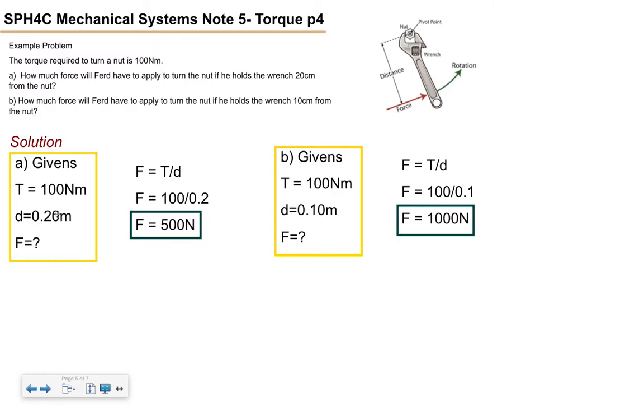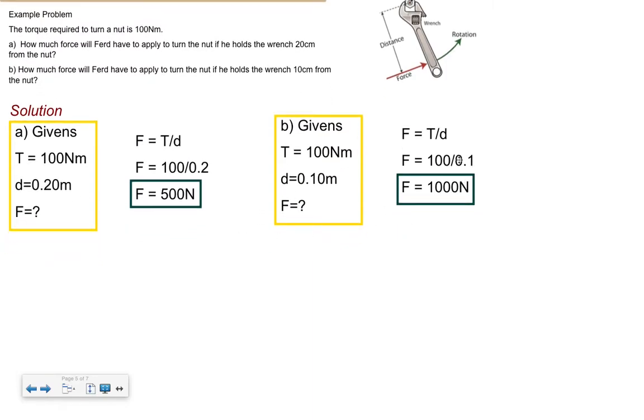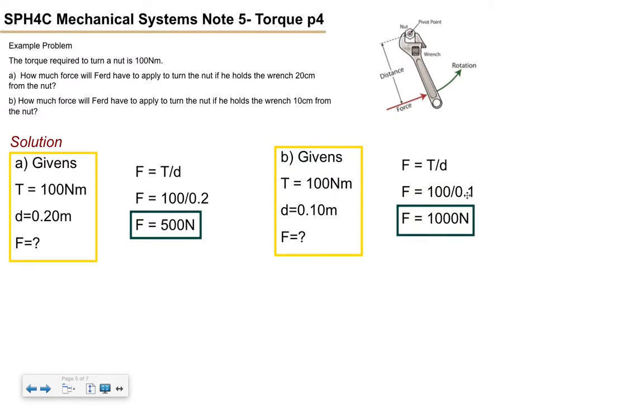So if you hold it 20 centimeters away, however, if you go twice as close like you go to 10 centimeters then you're looking at 1000 N. And if you could pull it out to 40 centimeters you'd be looking at 250 N. So you can apply less force by holding something further away from the fulcrum.